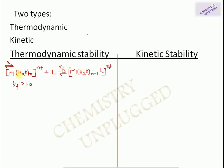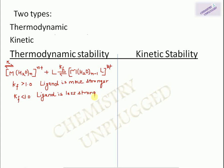If Kf is less than 1, the formation is not favored and the reaction goes in the backward direction, meaning the ligand is weaker than water. This equilibrium constant is also known as the stability constant or formation constant, and it is a measure of the thermodynamic stability of a complex.